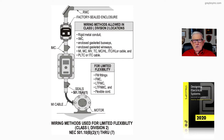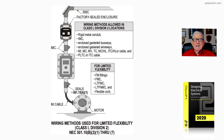We could use flexible cord under certain conditions, and notice you would need a seal there. But if it's MI cable, then you wouldn't necessarily need a seal unless the engineer specifies one. Now the wiring methods that you could use at the top of the illustration —